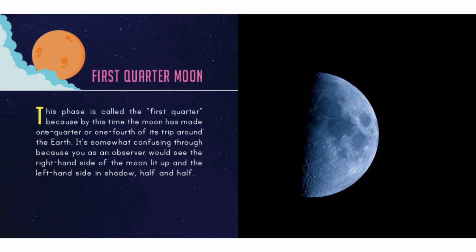The first quarter moon: this phase is called the first quarter because by the time the moon has made one quarter — one fourth — of its trip around the earth. It's somewhat confusing because you as an observer would see the right-hand side of the moon lit up and the left-hand side in shadow: half and half.